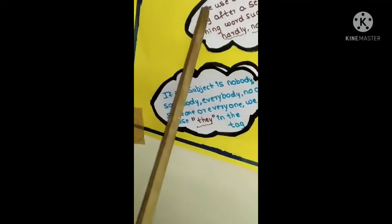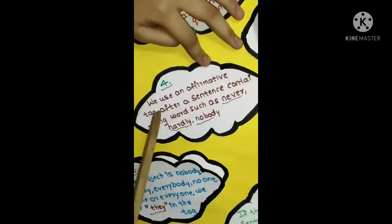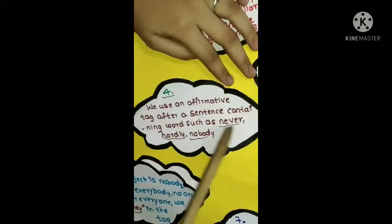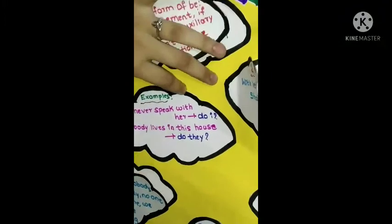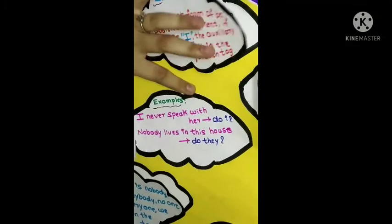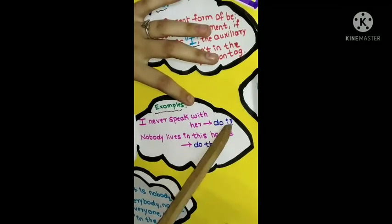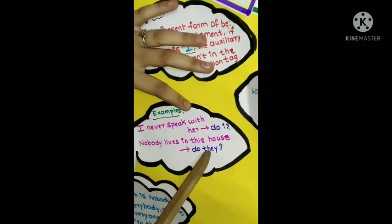Fourth point. We use an affirmative tag after a sentence containing words such as never, hardly, nobody. Examples: I never speak with her. Do I? Nobody lives in this house. Do they?